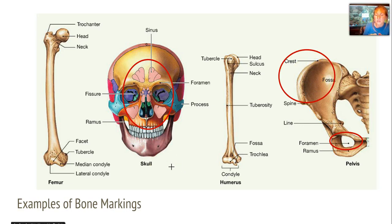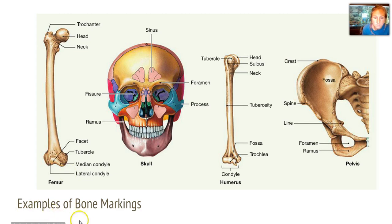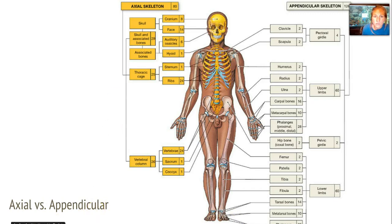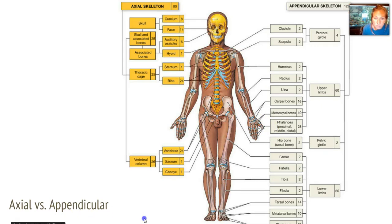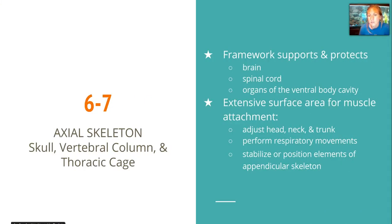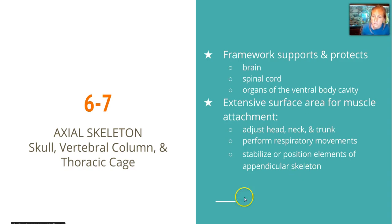If you know the markings, they're usually part of the name of the bone, and you can visually recognize that bone when you're trying to remember what they are. Here are your two skeletal divisions. You have your axial skeleton, which includes the skull, the thoracic cage, and the vertebral column with the sacrum and coccyx attached. We have our appendicular skeleton, which is everything else — your clavicle as part of the pectoral girdle attaching to your upper limbs, and your pelvic girdle attaching to your lower limbs. The axial skeleton supports and protects your brain, spinal cord, and organs of the ventral body cavity. It also provides a surface for muscle attachment so we can move our head, neck, and trunk, perform respiratory movements, and stabilize the appendicular skeleton.